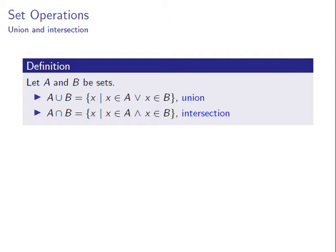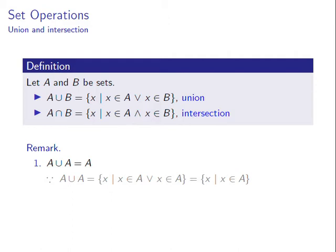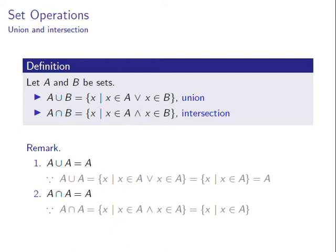For any set A, A union A is equal to A. Indeed, by the definition of set union, A union A consists of all objects x such that either x is in A or x is in A. This condition is equivalent to the condition x is in A, hence A union A is precisely the set A. Similarly, A intersection A is equal to A. By the definition of set intersection, A intersection A consists of all objects x such that both x is in A and x is in A, which is equivalent to x is in A, hence A intersection A is precisely the set A.